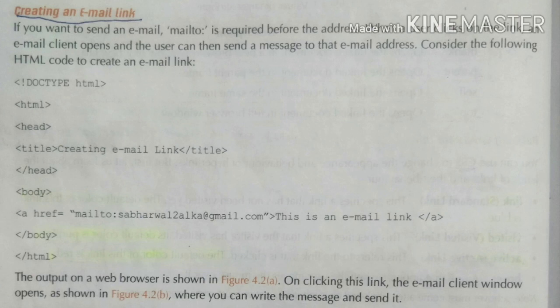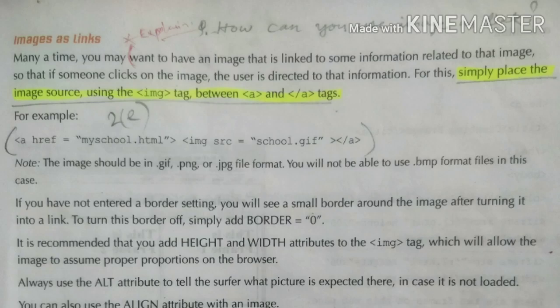A code example is given in your book — you can go through the code and see the output on page number 78. Next is images as links. Many times you may want to have an image that is linked to some information related to that image. If someone clicks on the image, the user is directed to the information. Simply place the image source using the image tag between the opening and closing anchor tags. The anchor tag is the link tag.